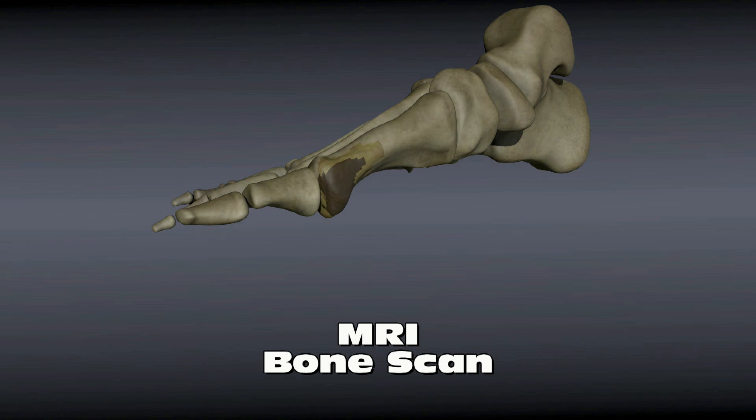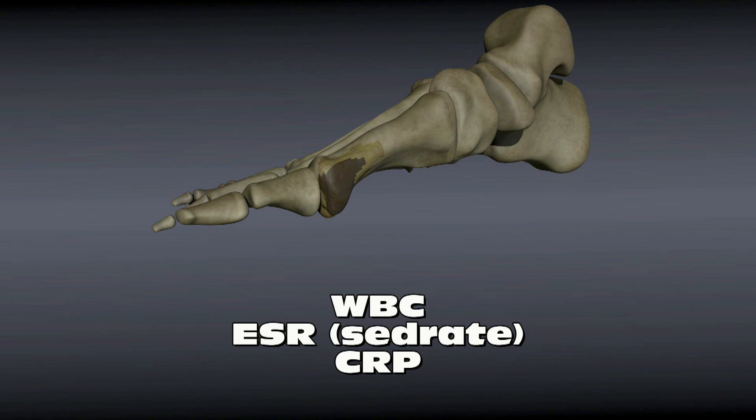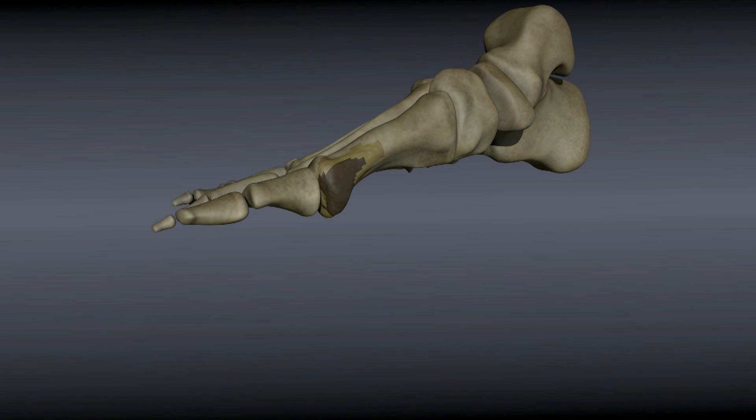Blood work is also important. The white blood cell count is usually high. Lab values known as the erythrocyte sedimentation rate, or sed rate, and the CRP, C-reactive protein, are usually obtained when osteomyelitis is suspected. If they are high, it raises the doctor's suspicion of infection.